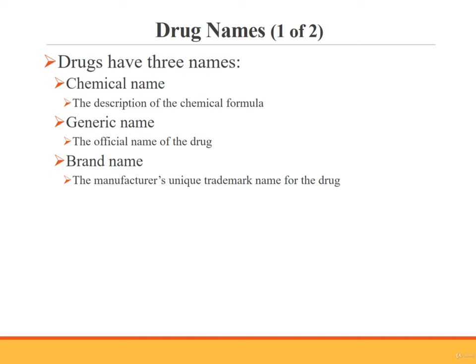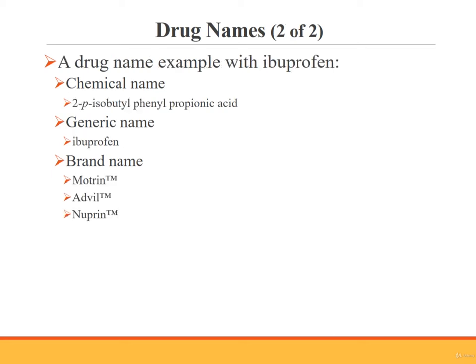Every drug has a chemical name that describes the chemical formula or molecular structure of that drug. Chemical names are usually very long, so a shorter name — the generic or non-proprietary name — is given to each drug, and it is recognized and accepted as the official drug name. Each drug has only one generic name, and it is not subject to copyright protection, so any pharmaceutical company may use it. When a company manufactures a drug for sale, it gives it a brand name or proprietary name, which is the company's trademarked name for the drug.